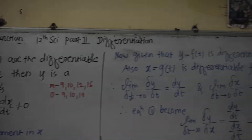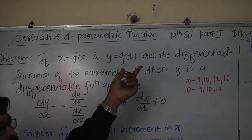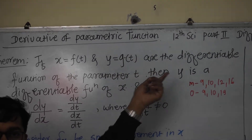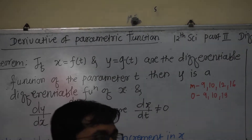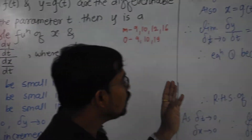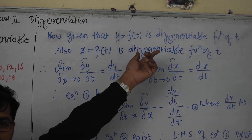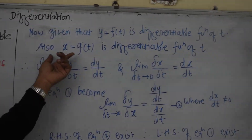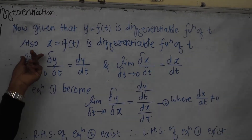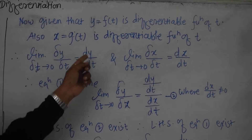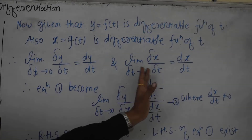Now we use the given information. Since x = f(t) is a differentiable function of t, and y = g(t) is a differentiable function of t, the derivatives dy/dt and dx/dt both exist. Therefore, limit as delta t → 0 of (delta y / delta t) = dy/dt, and limit as delta t → 0 of (delta x / delta t) = dx/dt.